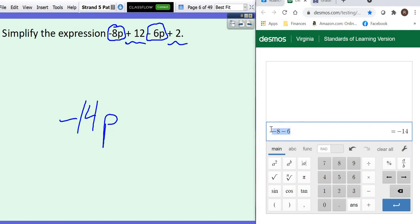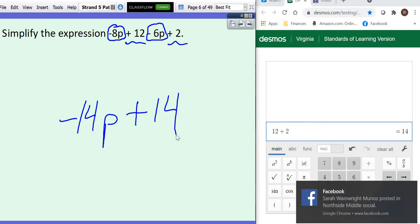Notice how I'm using the signs. 12 plus 2 is positive 14. So there you go. When you simplify that expression, you end up with negative 14p plus 14.